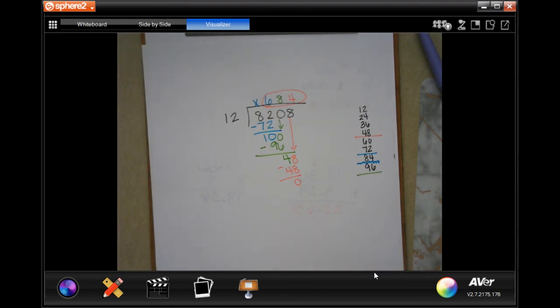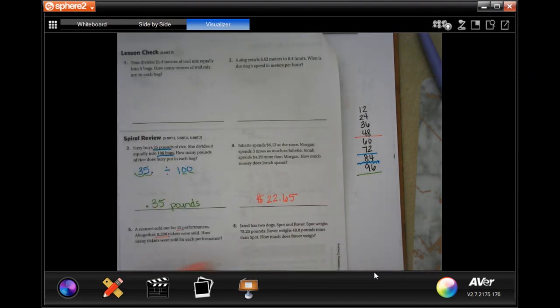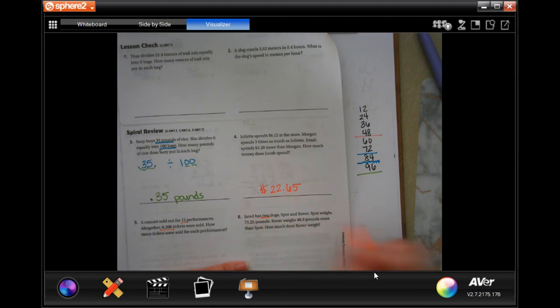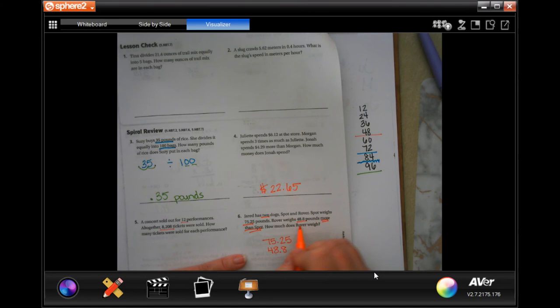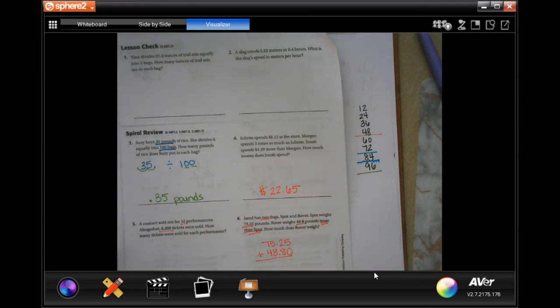Jared has two dogs. Spot and Rover. Spot weighs 75.25 pounds. And Rover weighs 48.8 pounds more than Spot. How much does Rover weigh? All we have to do then is add them up. Making sure we line up our decimals. And if you don't like that there's no number here next to that 5, put a 0. It is after the decimal place. You are just fine.